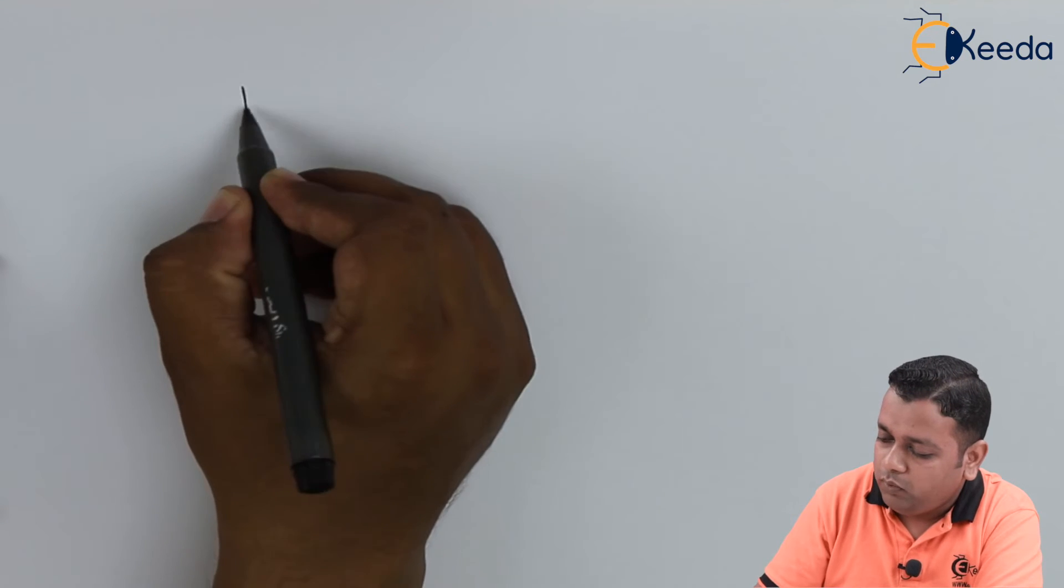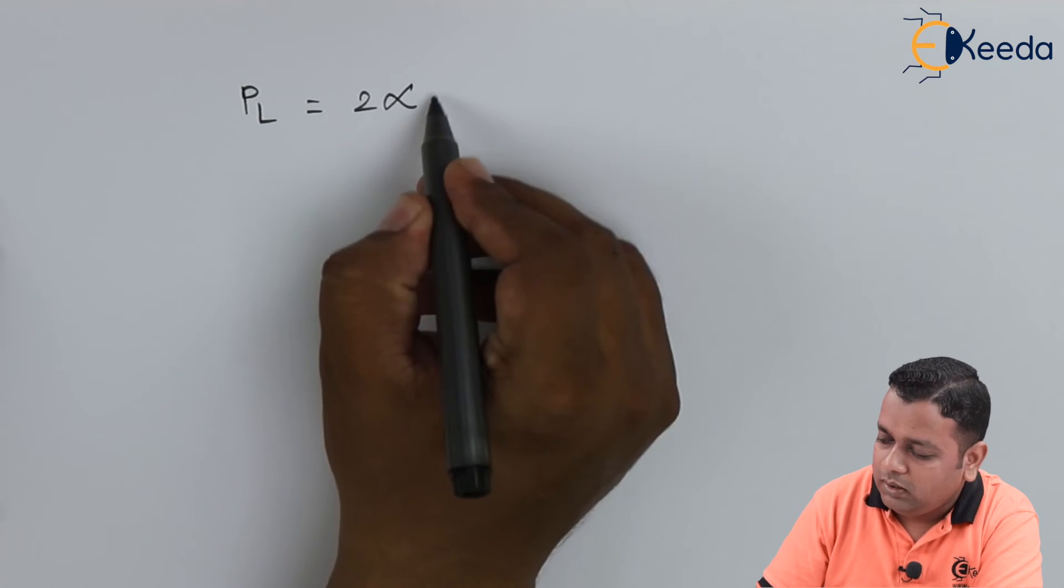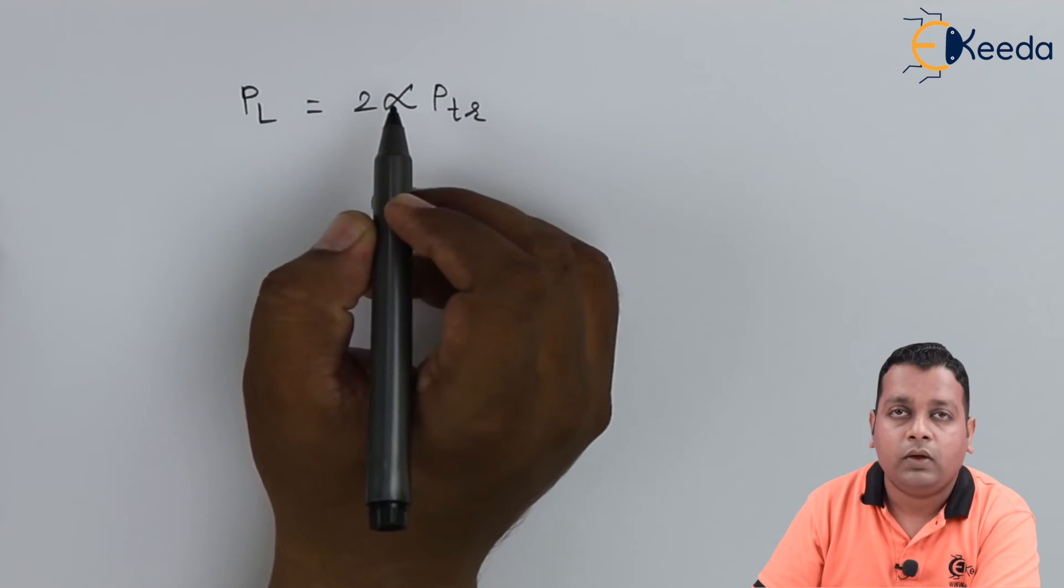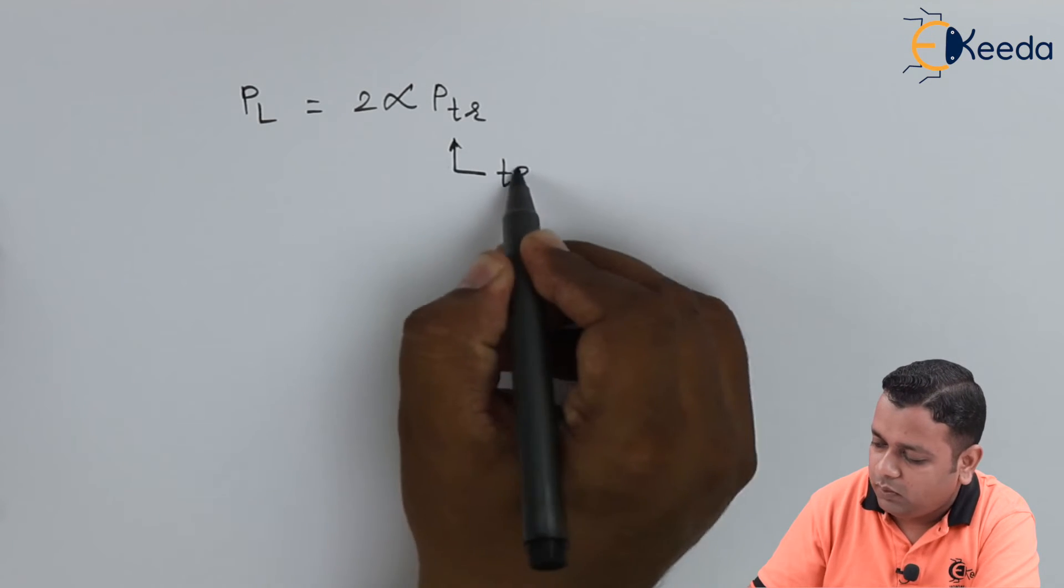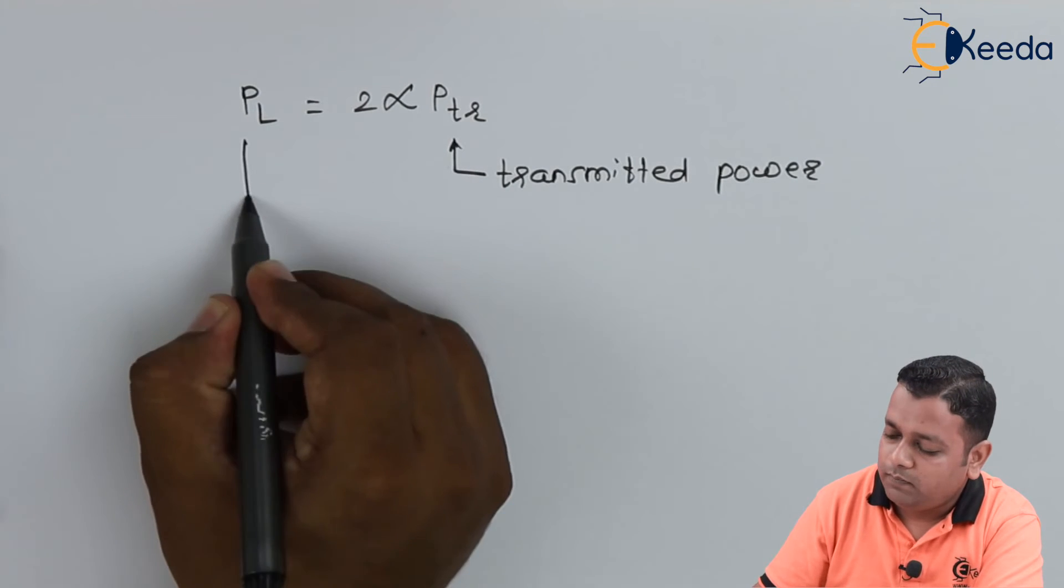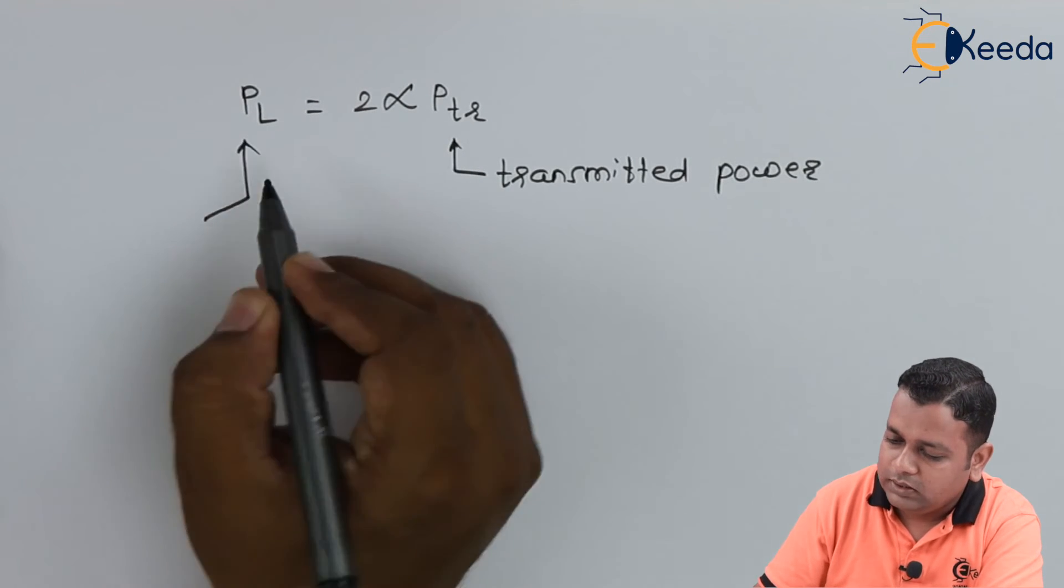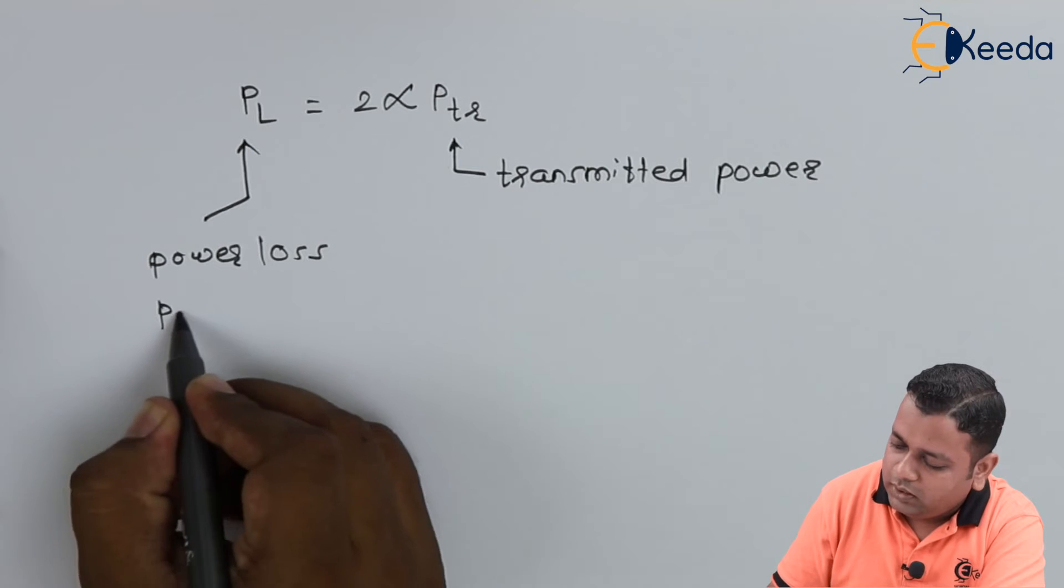Now extending further the discussion for the ideal type of transmission into the TEM mode for the conventional transmission line, we have the relation giving the power loss denoted by P_L is equal to 2 times alpha times capital P_TR, where capital P_TR is nothing but the transmitted power, whereas P_L is nothing but the power loss